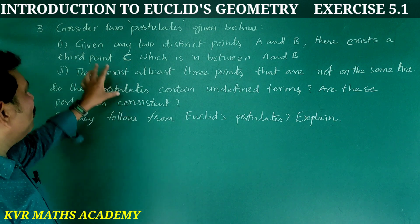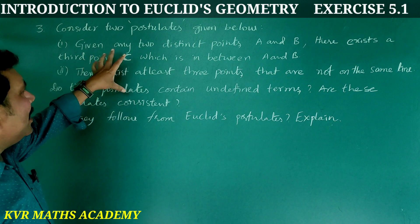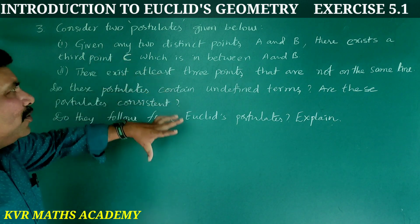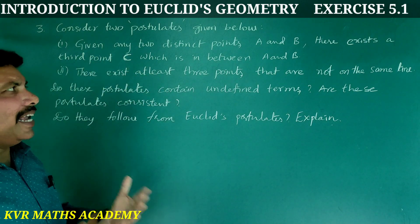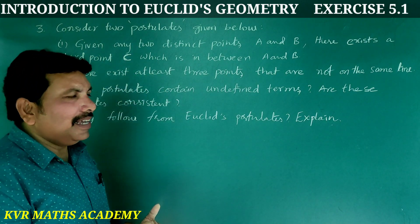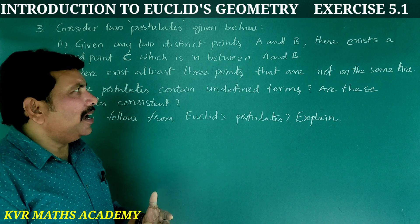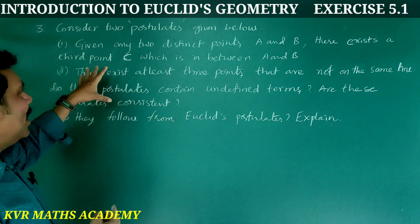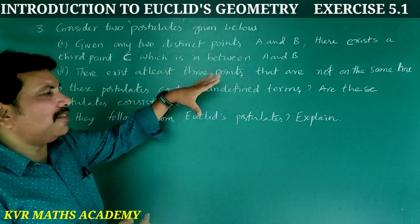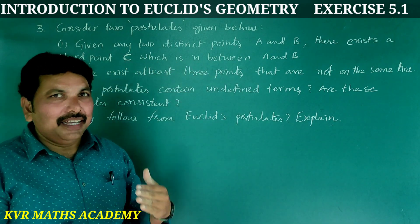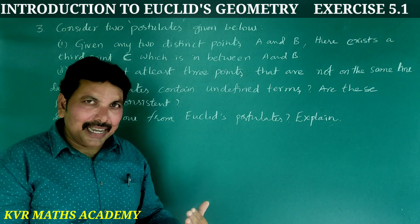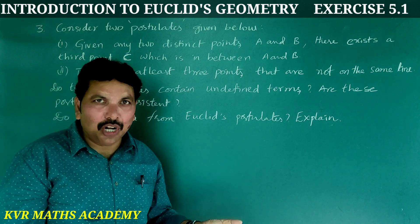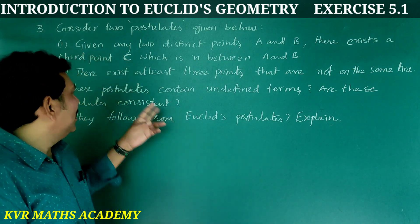First one: Given any two distinct points A and B, there exists a third point C which is in between A and B. This third point C lies between A and B.